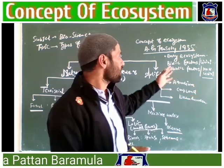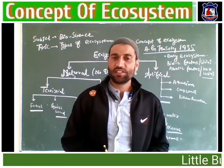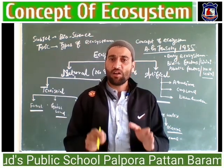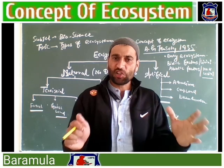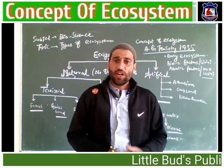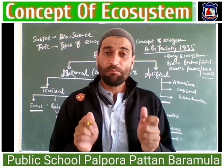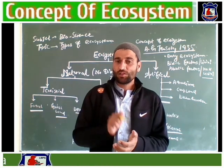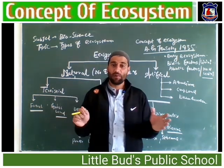We understood who gave the concept and what its components are. When these components react and interact with each other, a functional unit is created — that functional unit is called an ecosystem. An ecosystem may be as small as a drop of water, and it may be as big as a mighty ocean like the Pacific Ocean. So write down this point: it may be as small as a drop of water or as big as a mighty ocean.